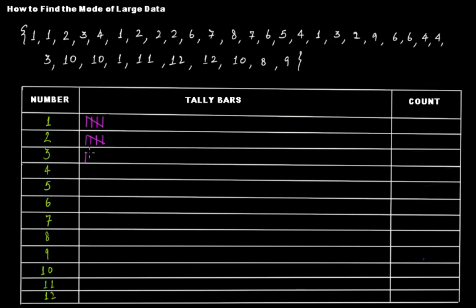What about four? Four appears once, then a second, then a third, then a fourth — four times for value four. What about five? Five appears one time — so just once for value five.